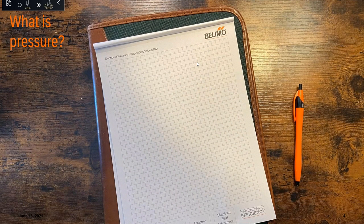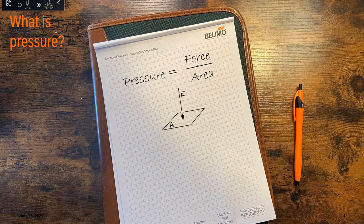Generally speaking, what is pressure? If you want to look at it as an equation, pressure is force over area — a given force over a cross-sectional area. We can see a force vector coming down perpendicular to a given cross-sectional area. Now, this equation isn't too relative to us in the HVAC building automation world, because we're not inhabiting a flat piece of paper — we're inhabiting and living in zones, rooms, and so on.